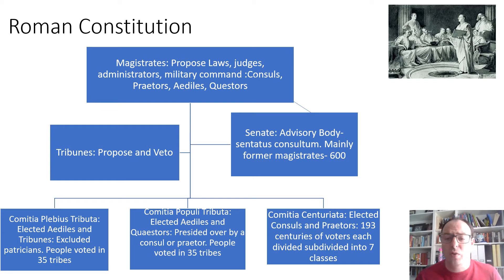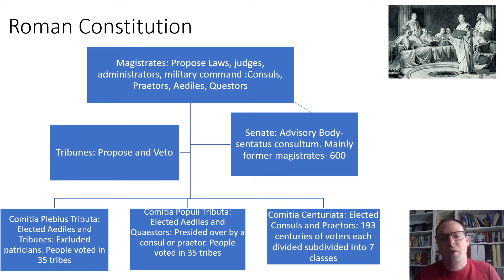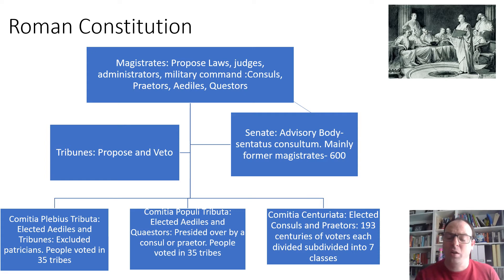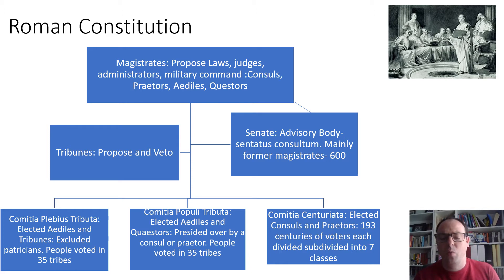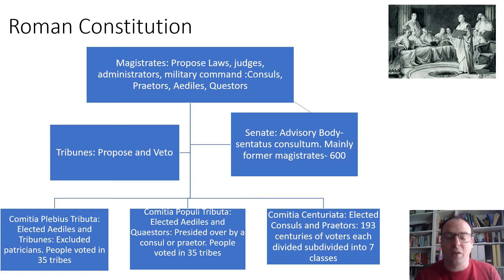Separate to that, we have the tribunes. The tribunes of the plebs were a really key position. They could, like the magistrates, propose laws, and they could also veto them, which makes them incredibly important. The constitutional idea was to stop magistrates overriding and doing whatever they wanted against the interest of the Roman people. The tribunes would stand up for the people and veto what was proposed. It was a very good position to hold because any magistrate would want a cooperative tribune who could speak up for things they wanted and veto things they didn't.